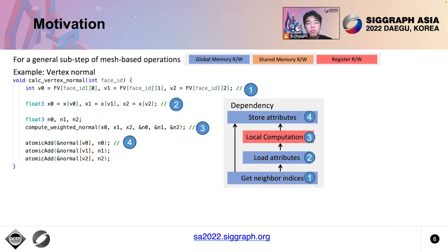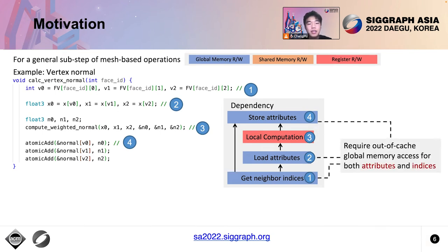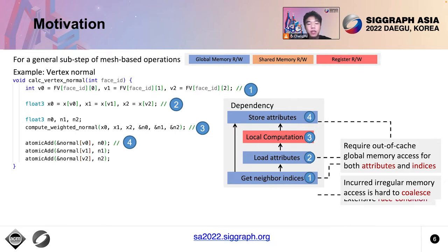Let's take the surface normal function as an example and focus on its data flow. Getting neighbor indices and loading data attributes often require out-of-cache global memory access, which can be slow. Moreover, GPU requires coalesced global memory access to maximize bandwidth, but mesh computations incur irregular memory accesses that are hard to coalesce. Once the computations are done, the storing operation kicks in, bringing not only another global memory access but potentially extensive race conditions as well.